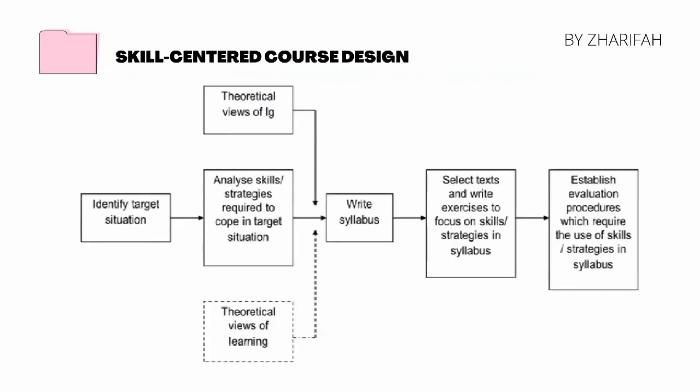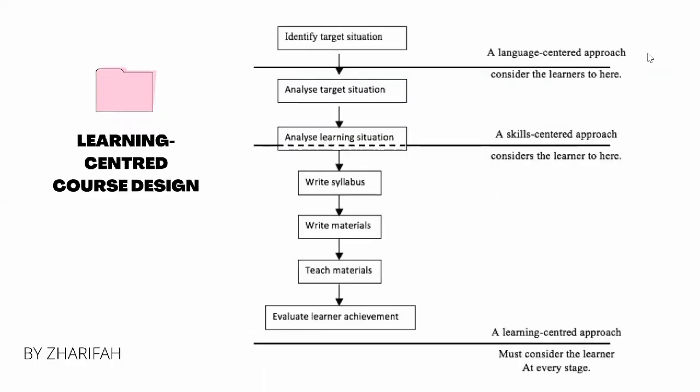The second is skill-centered course design. This approach concentrates on competence and is intended to help learners develop skills and strategies that will help them understand the course. There is a stage of analyzing skills or strategies required. It is not focused on achievement, but to make learners aware of their own abilities and potential, thereby motivating them to work on goals so they can continue to improve. The third is learning-centered. In this approach, learners are ultimately responsible for their own learning, using different strategies based on the learner's desire. The learner's decision determines the learning process completely, because learning is an internal process that depends on the knowledge learners already have. A learning-centered approach must consider the learner at every stage.